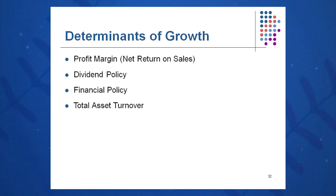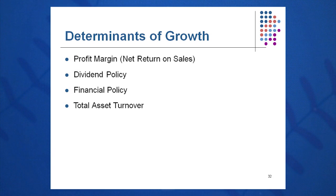What determines growth? A profit margin and how much of that profit we keep versus give away. Dividend policy matters — one way to grow faster is to keep it all. Many higher-growth companies listed on the Nasdaq are younger, quickly growing, and plow all net income right back in, allowing them to grow faster. Financial policy — how much debt we take on versus equity — also has a big impact on growth, as does total asset turnover. Notice that these are several key components in ROE, so obviously ROE impacts growth.